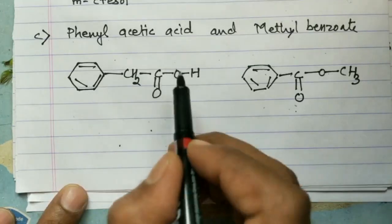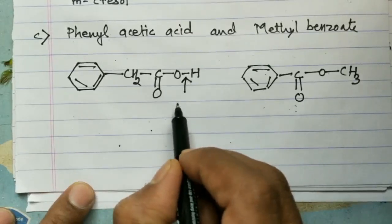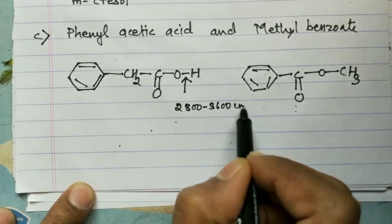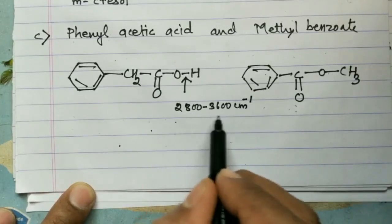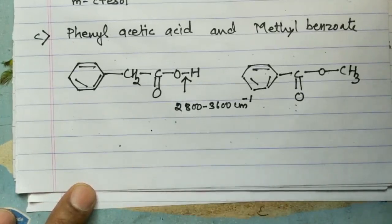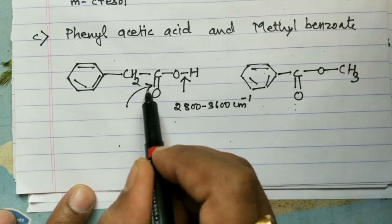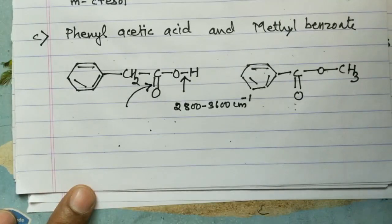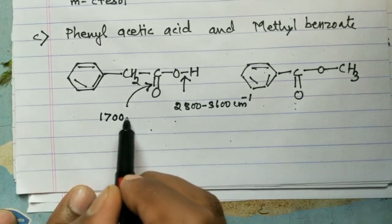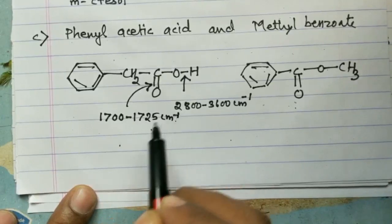In phenyl acetic acid, the OH group of the carboxylic acid absorbs at 2800–3600 cm⁻¹ depending on the hydrogen-bonded form. Additionally, the carbonyl group of the acid shows an IR absorption band at 1700–1725 cm⁻¹.